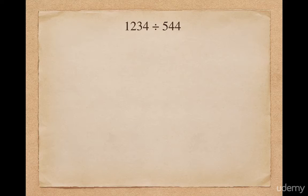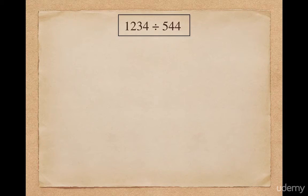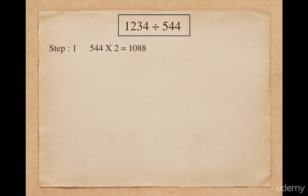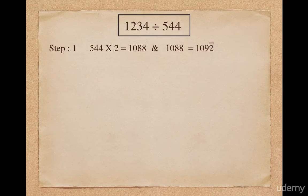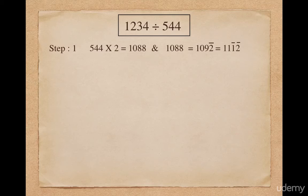Last example: suppose I want to divide 1234 by 544. 544 does not meet any criteria of Nikhilam formula or Parvartiya method. So as a solution, in the first step I multiply 544 with 2 and it will become 1088. Please note that 1088 has a bigger digit which is 8, so I will convert this bigger digit into a smaller digit using Vinaculum formula. 1088 will be converted to 109 2-bar using Vinaculum. Again I encounter 9 as a bigger digit, so I will convert 109 2-bar into 11 1-bar 2-bar using Vinaculum. So our new divisor will be 11 1-bar 2-bar. Now I can use the Parvartiya formula.